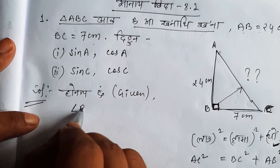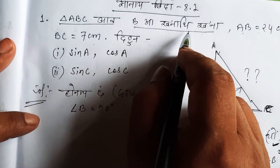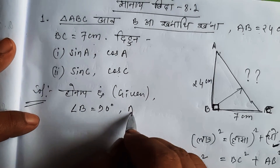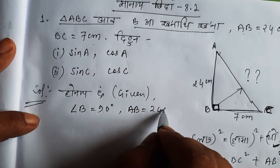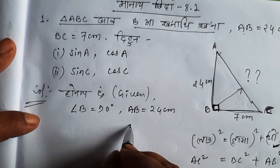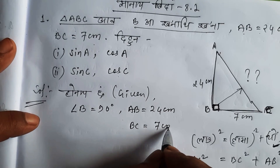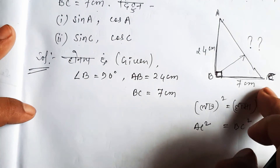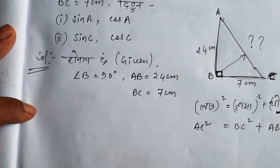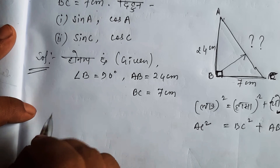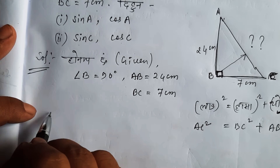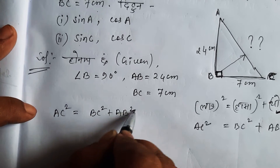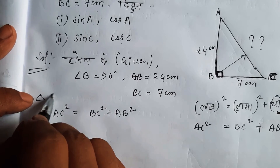The right angle is at B, 90 degrees. AB is 24 cm, BC is 7 cm. We need to find AC. The formula is: AC squared equals BC squared plus AB squared.